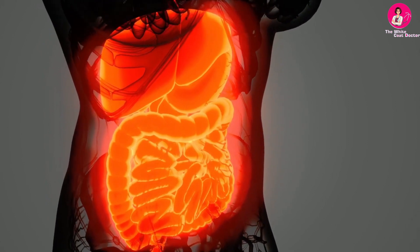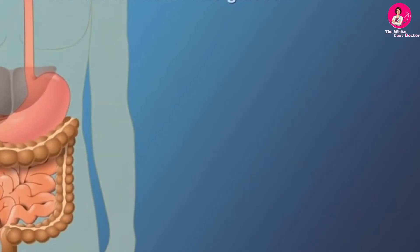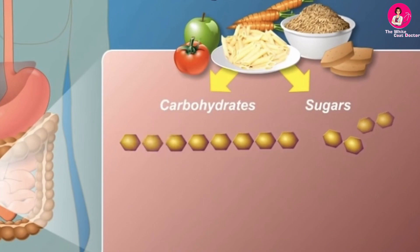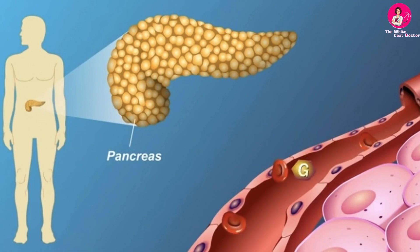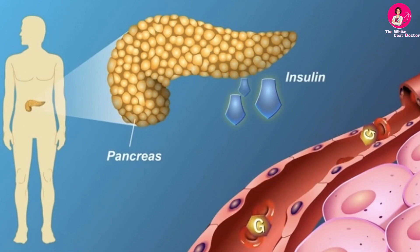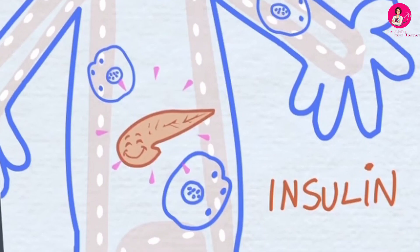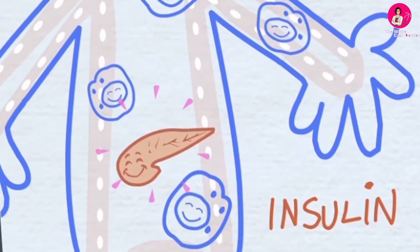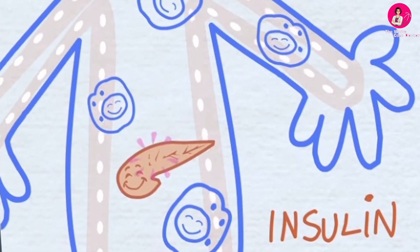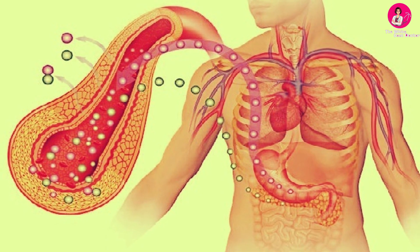Diabetes is a condition in which the body does not properly process food for use as energy. Most of the food we eat is turned into glucose or sugar for our bodies to use for energy. The pancreas is an organ that lies near the stomach and releases a hormone called insulin to help glucose get into the cells of our bodies. When you have diabetes, your body either doesn't make enough insulin or can't use its own insulin as well as it should. This causes sugars to build up in your blood.